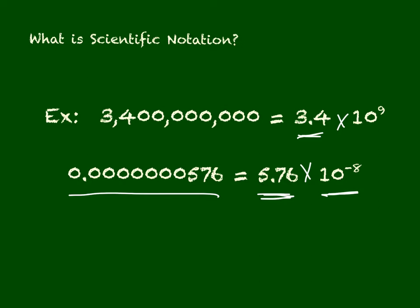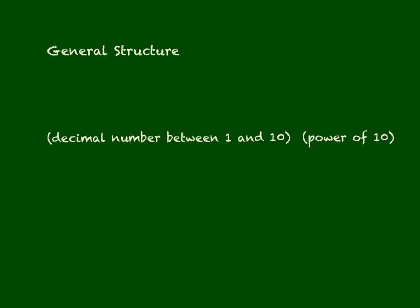So let's try some examples. In scientific notation we have that general structure in which we have a number between 1 and 10 and it is always multiplied by a power of 10.